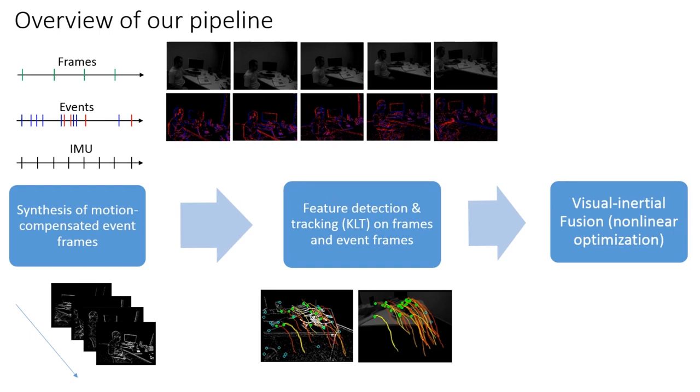Then, visual features are detected and tracked both in the event stream and in the stream of standard frames. Finally, the feature tracks from both data sources are fused with the inertial data using nonlinear optimization, yielding new pose estimates.